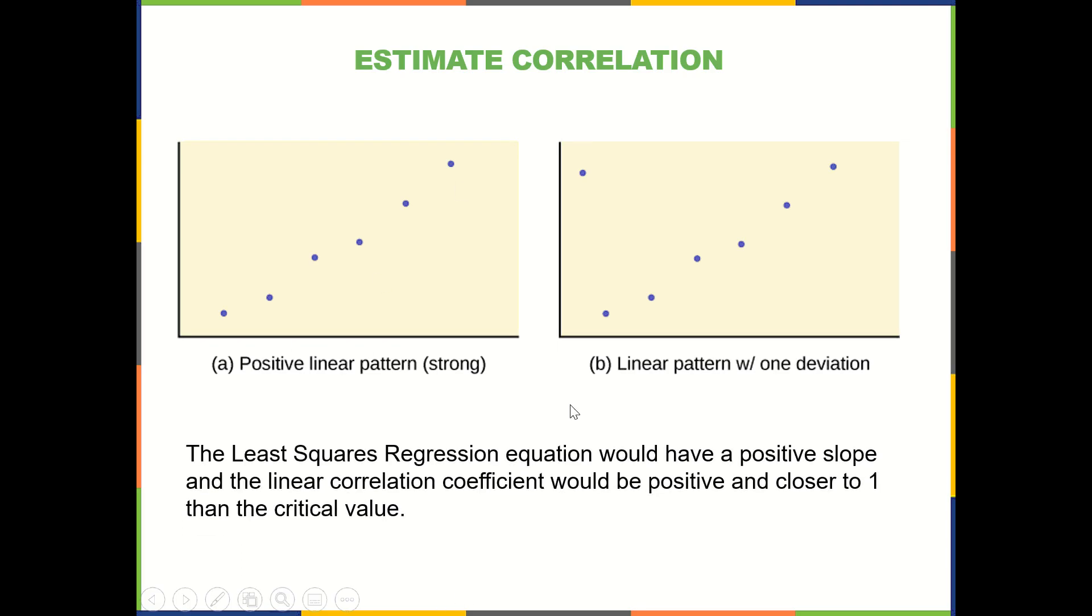Okay, so looking at these examples, you can see that there's a pretty strong correlation, linear correlation specifically. And so there would be a positive slope and also a positive linear correlation coefficient close to positive 1.